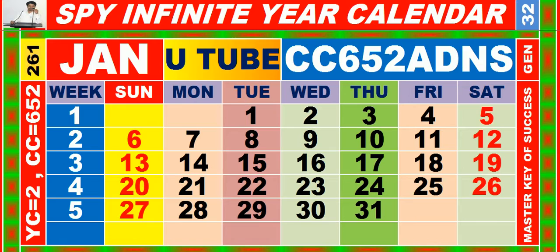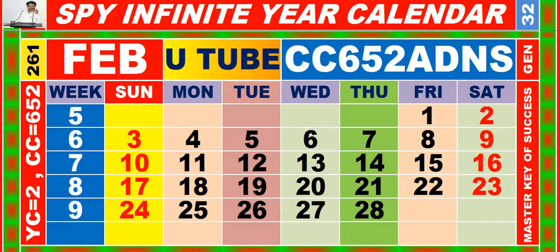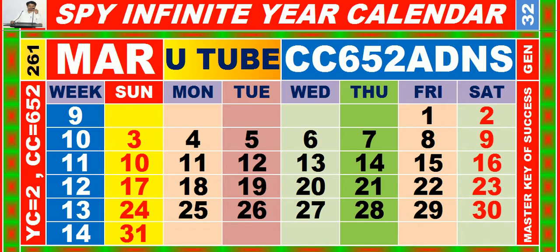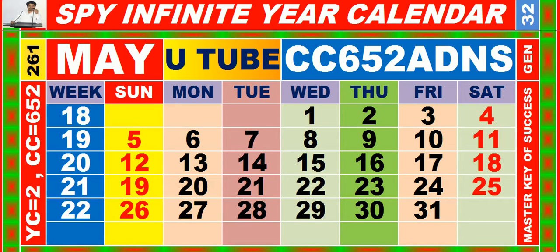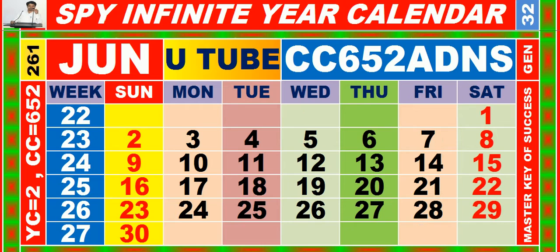Calendar for the month of January, having calendar code equal to 652. Calendar for the month of February, having calendar code equal to 652. Calendar for the month of March, having calendar code equal to 652. Calendar for the month of April, having calendar code equal to 652. Calendar for the month of May, having calendar code equal to 652. Calendar for the month of June, having calendar code equal to 652.